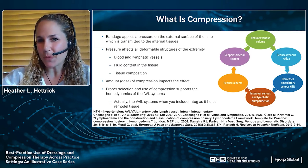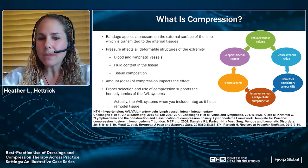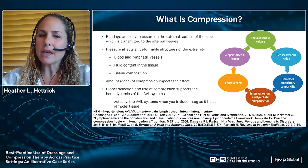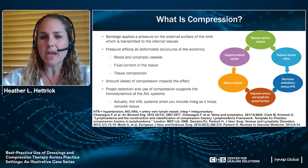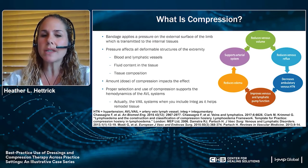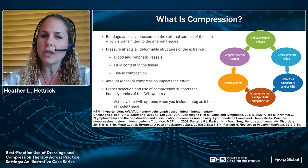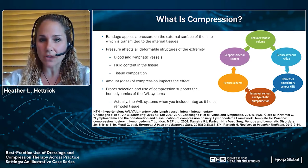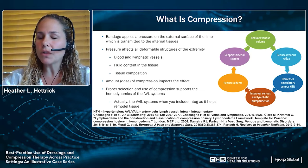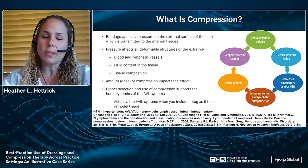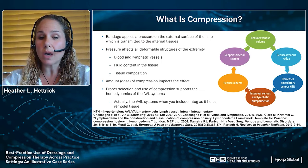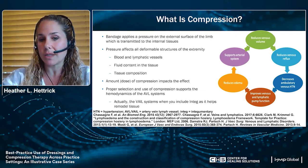It's always important to start with what is compression. Basically, it's a bandage or device that applies pressure on the external surface of the limb, which is then internally transmitted to the internal tissues where it causes change. Pressure affects all deformable structures of the extremity, including blood and lymphatic vessels, fluid content in the tissues, and even the tissue composition itself.